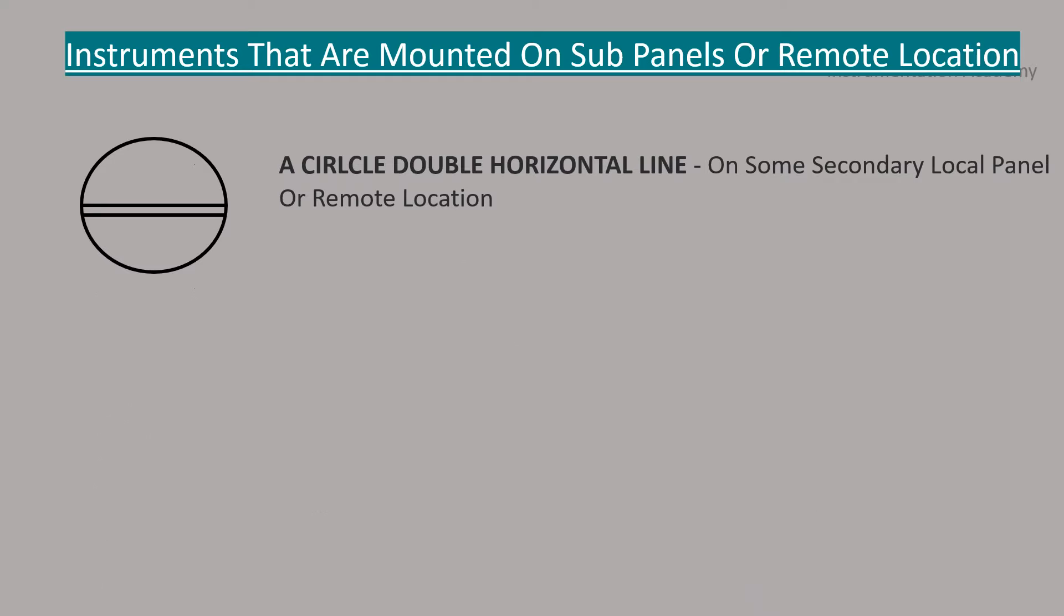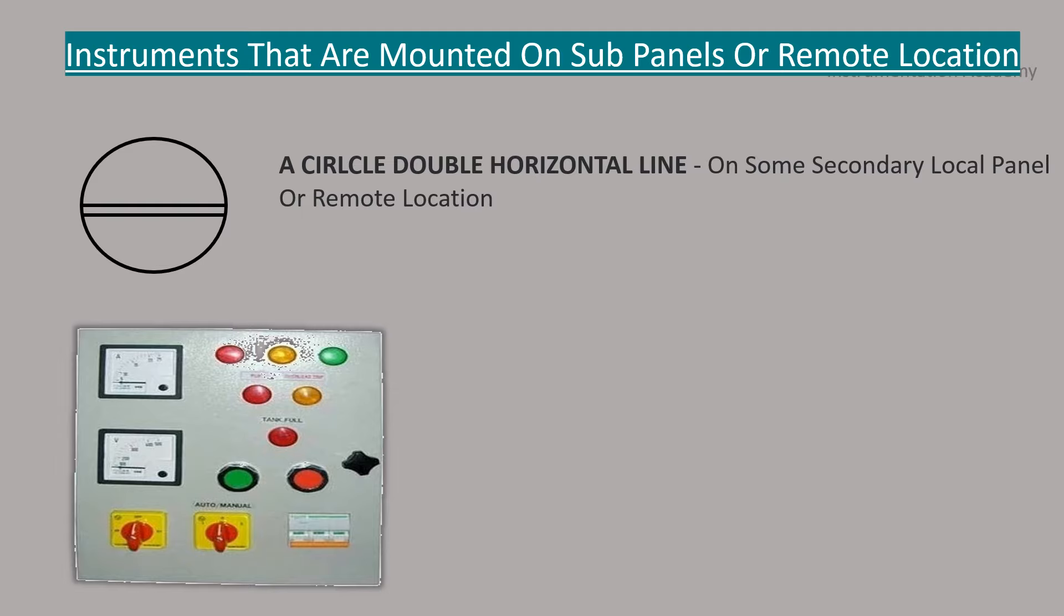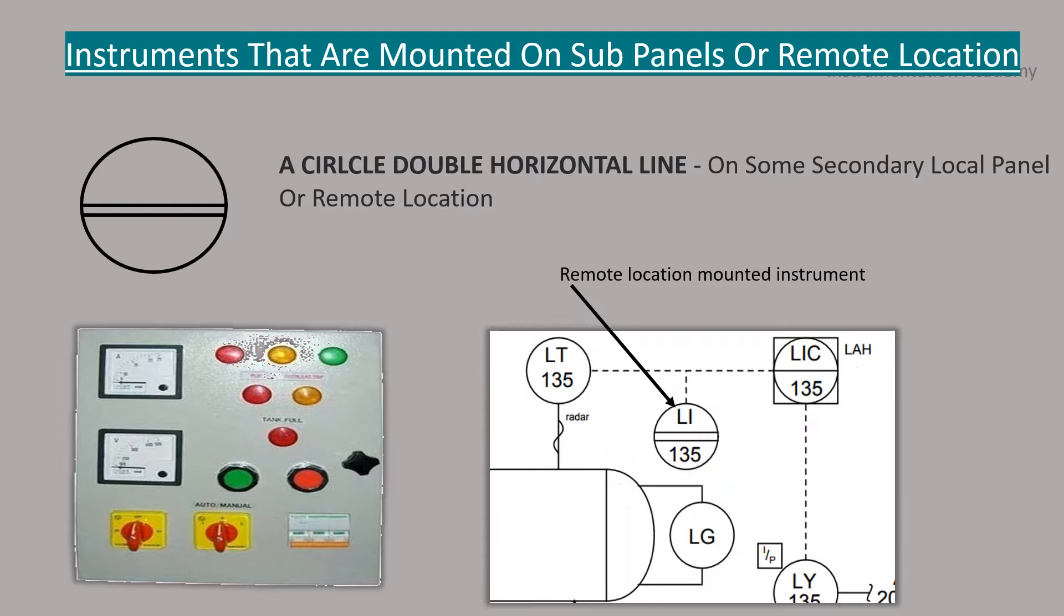Circle with double horizontal line. This represents instruments that are mounted on the sub panels or remote locations. And this is how they are represented in a P&ID.